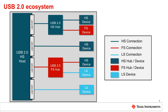A low speed device will always connect at low speed regardless of the speed capabilities of the upstream host or hub. Likewise, a full speed device or hub will always connect at full speed. A USB high speed device, however, will attach initially at full speed and then should transition to high speed if connected to a high speed capable host or hub, or connect at full speed if connected to a full speed capable host or hub. The high speed detection handshake is how the speed of this connection is determined.